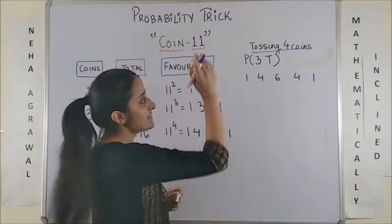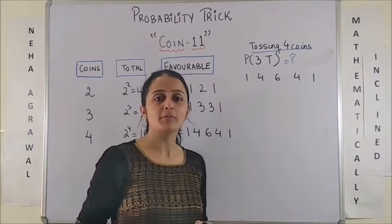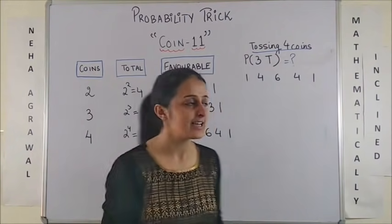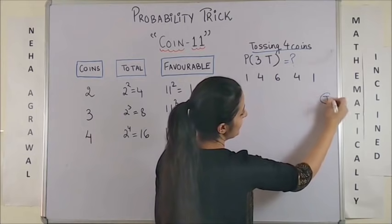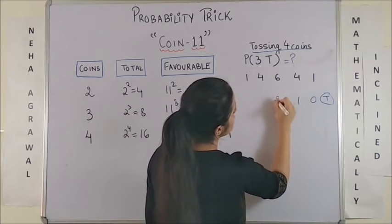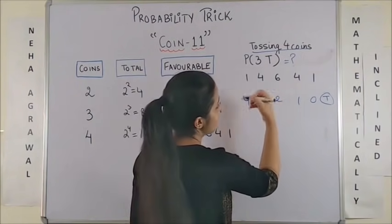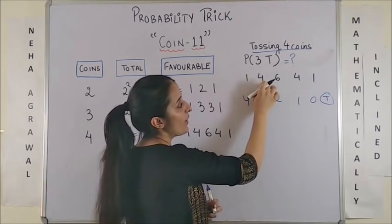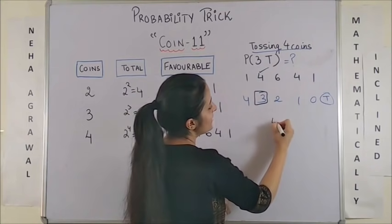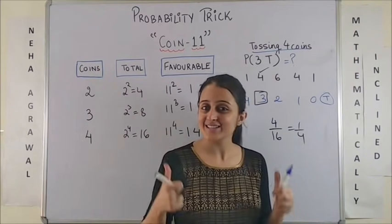Now, taking up one more question. It's the same tossing of 4 coins. And suppose I have to find what is the probability of getting 3 tails. You know for tails, we start from right to left. So, for tail, we have 0, 1, 2, 3 and 4. Now, probability of getting 3 tails is actually the same as saying probability of 1 head. So, it is 4. It will be 4 by 16. That is 1 by 4. Wasn't that super simple?